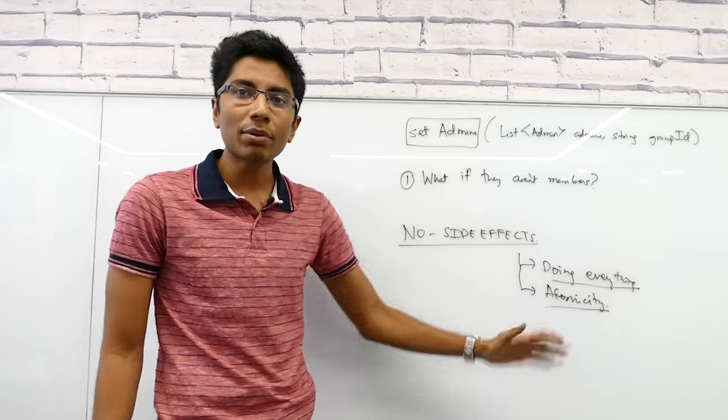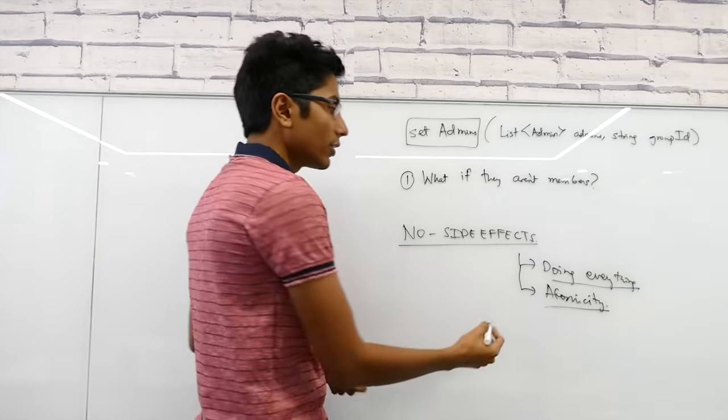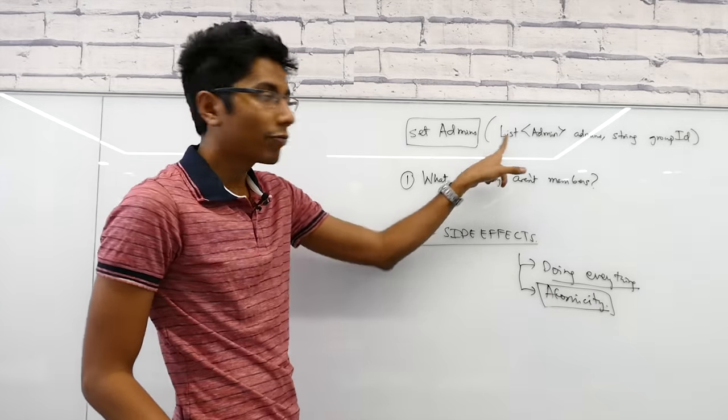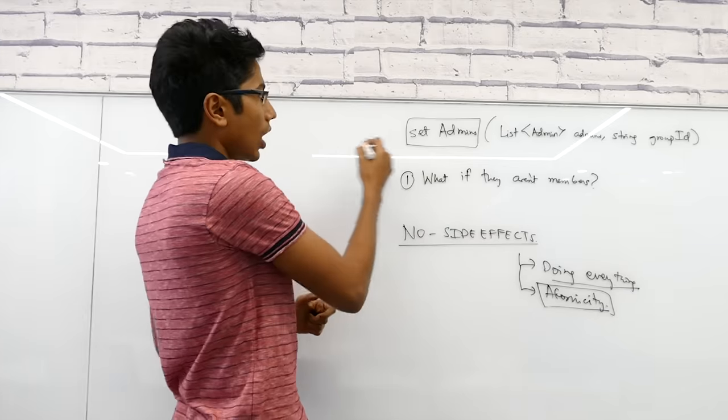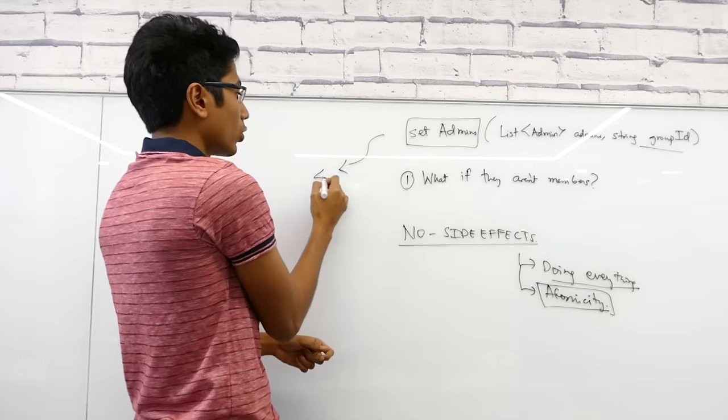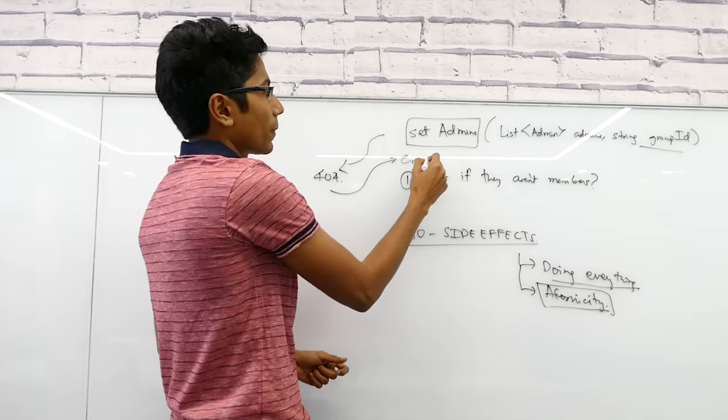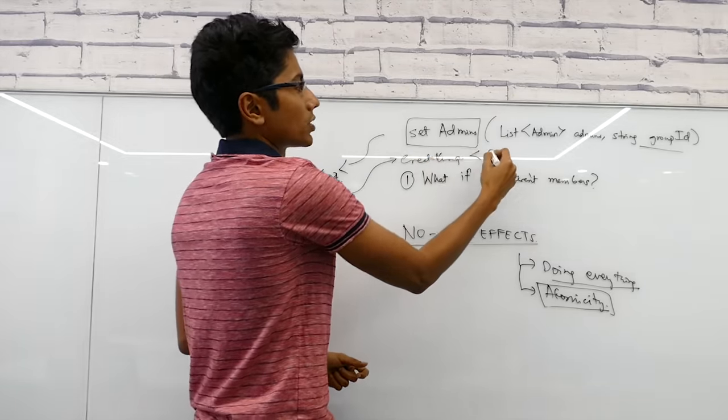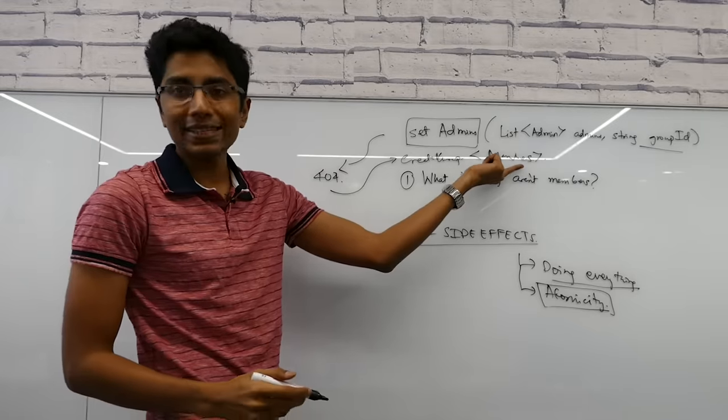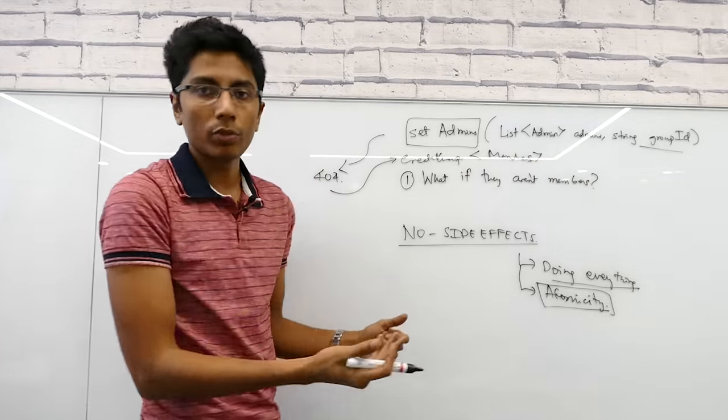To an extent, atomicity can be mitigated because you want an action to happen one after another. You can in this microservice itself set the admins. If it fails, then ask the person to make a create group call. If the group doesn't exist, you say 404, the group does not exist. Now the client makes a create group call with some members passed in, a list of members. Now you can set these guys as admins if you like. So a list of members, a list of admins. And here you can bring in the atomicity instead.